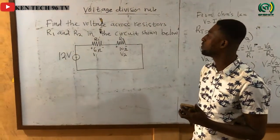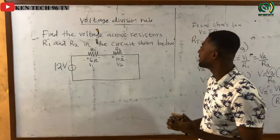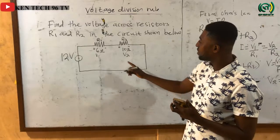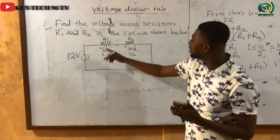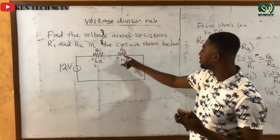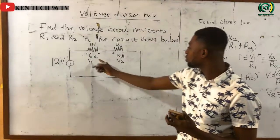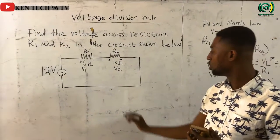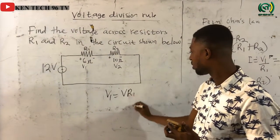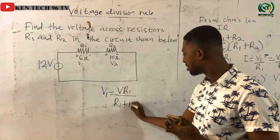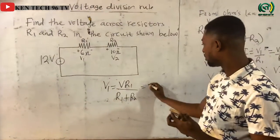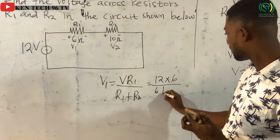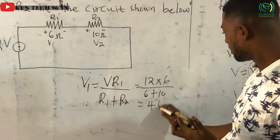So let's solve this example on the board using the voltage divider rule. We are asked to find the voltage across resistor R1 and R2 in the circuit shown below, such that V1 is the voltage drop across R1 and V2 is the voltage drop across R2. To calculate V1, since R1 and R2 are in series, I can use the voltage divider rule: V1 equals V times R1 divided by R1 plus R2, which is 12 times 6, all over 6 plus 10, giving us 4.5 volts.